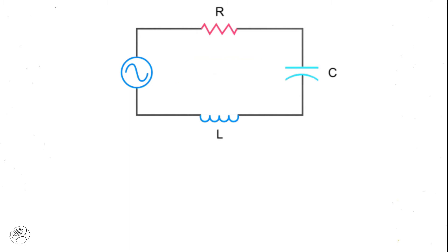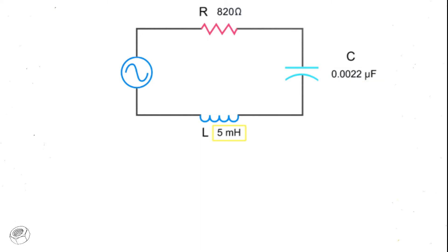In this circuit, there is an 820 ohm resistor, a capacitor of 0.0022 microfarads, and an inductor of 5 millihenries. The voltage source is 20 volts operating at a frequency of 40 kilohertz.